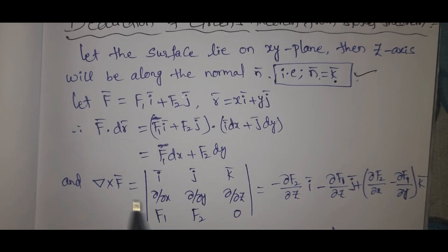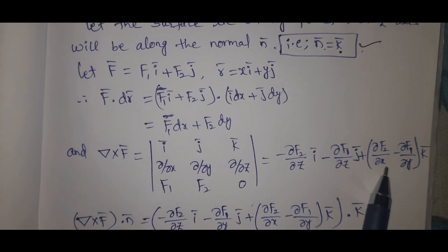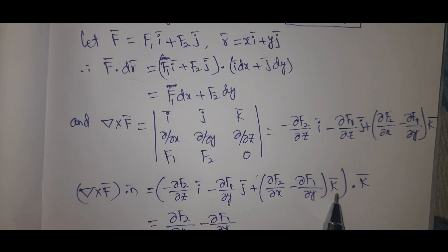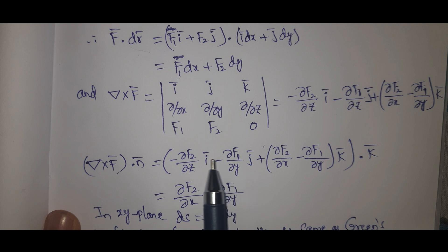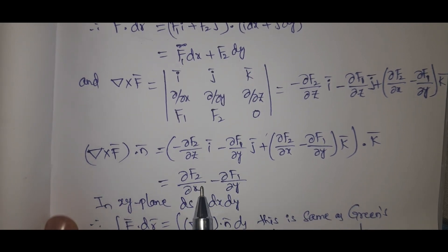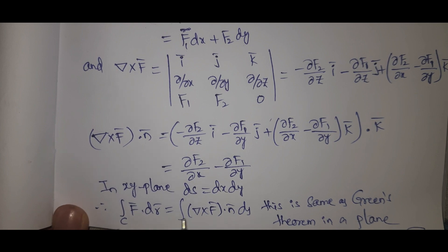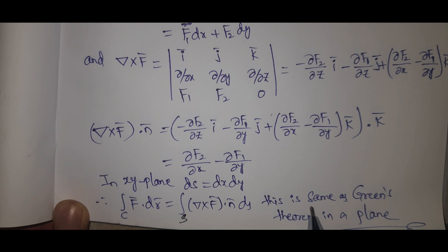In the xy plane, F bar dot n bar. dS equal to dx dy. Integral C del cross F bar dot n bar ds - this is the same as Green's theorem in the plane.